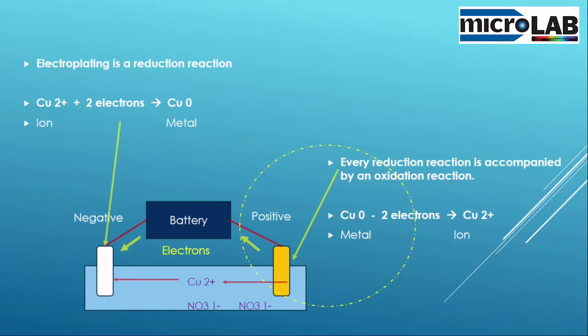Every reduction reaction is accompanied by an oxidation reaction. You have to add electrons to get the material to reduce, the ion to reduce. Where do you get them? You get them by taking them away from somebody else. This is called an oxidation reaction.